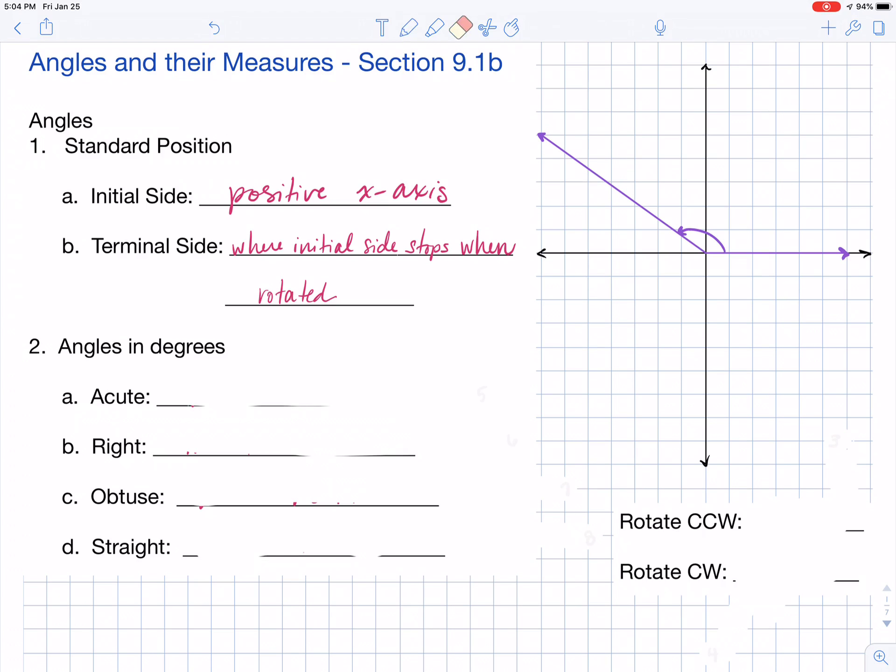You can rotate in either a clockwise or a counterclockwise direction. If you rotate in a counterclockwise direction, it is going to be a positive angle, and a negative angle will be gotten when you rotate in a clockwise direction.